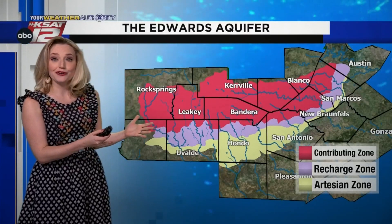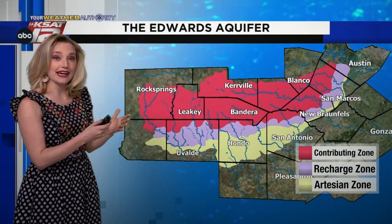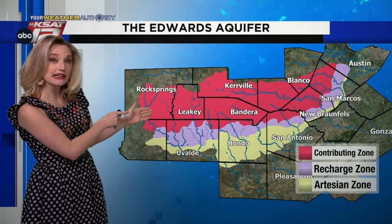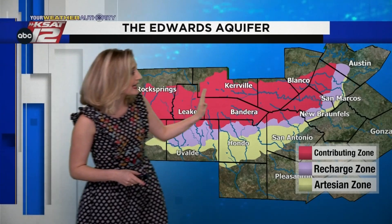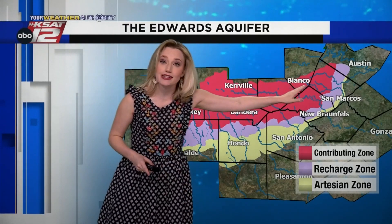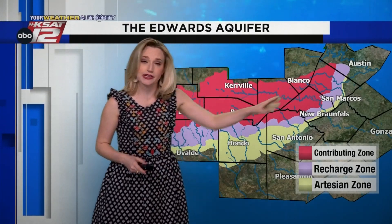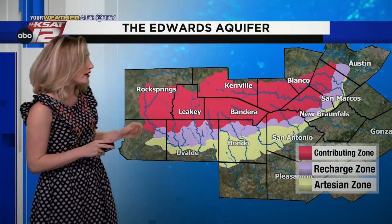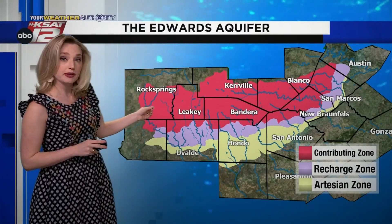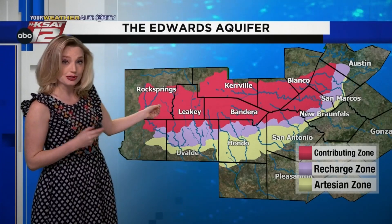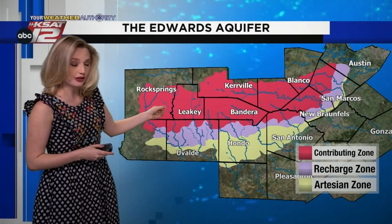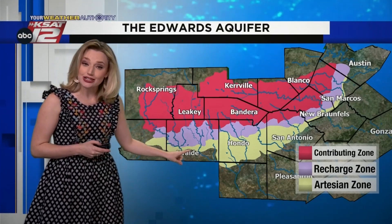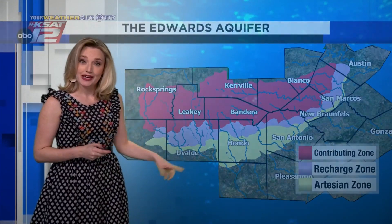The Edwards Aquifer encompasses an area from Edwards and Kinney Counties as far east as Travis and Hayes Counties. The three important sections of the aquifer are the contributing zone, which can be found in the Hill Country, the recharge zone, and the artesian zone.